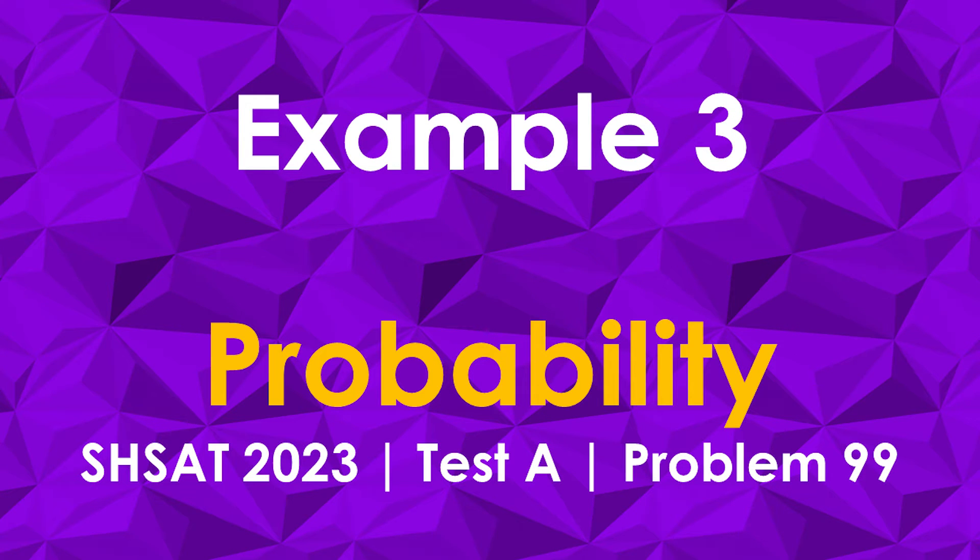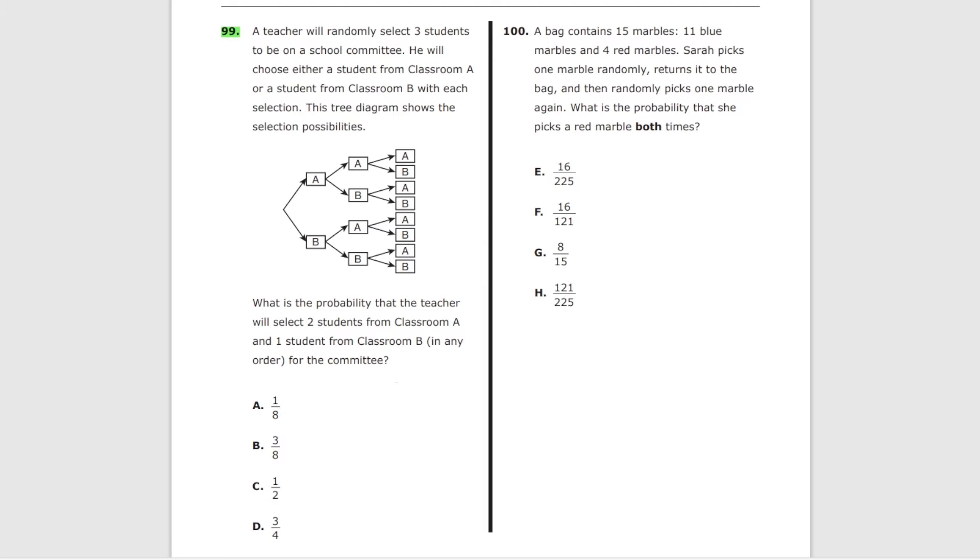Problem 99 from test A. A teacher will randomly select three students to be on a school committee. He will choose either a student from classroom A or a student from classroom B. With each selection, the tree diagram shows the selection possibilities. What is the probability that the teacher will select two students from classroom A and one student from classroom B for the committee? How many total options do you have? If you count it, you're going to get to eight. That's your total.